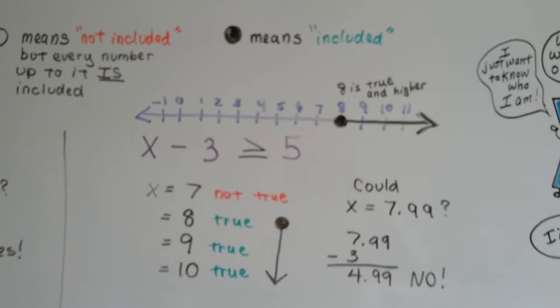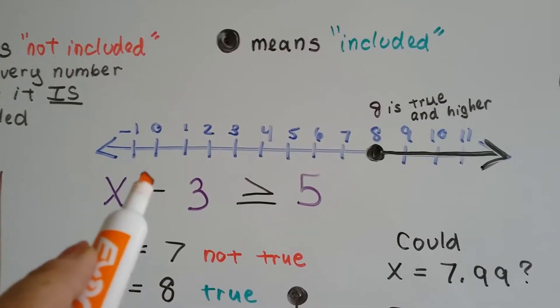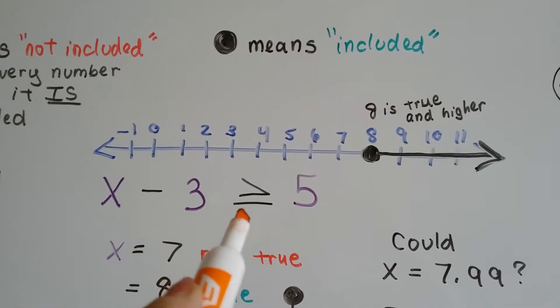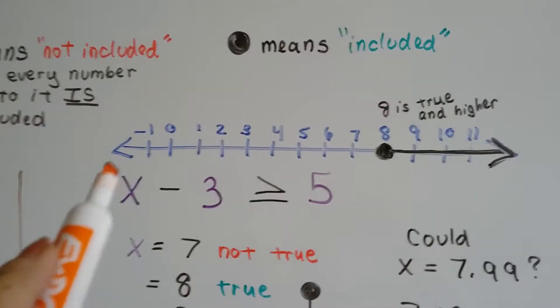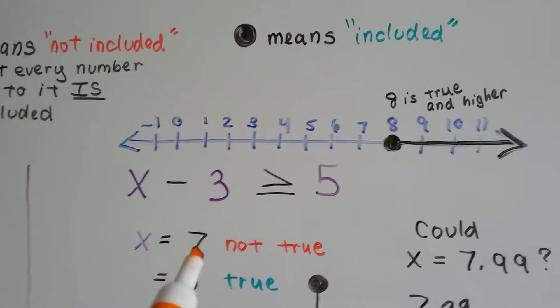So now I'm going to show you the closed dot, the one that means included. Now our inequality says x minus 3 is greater than or equal to 5. So what could x be that would make this true?